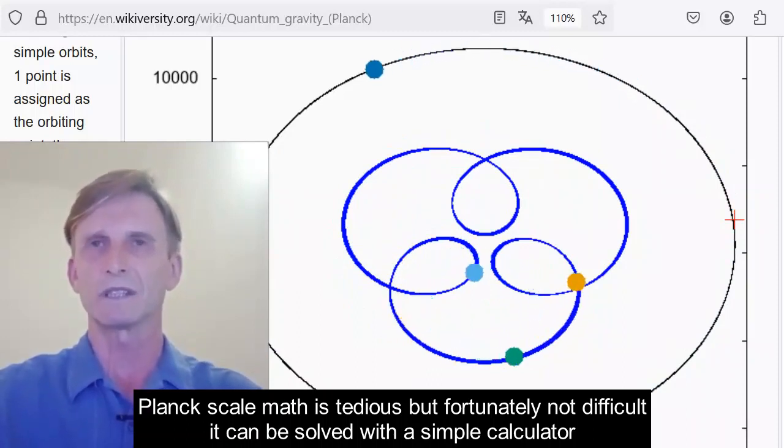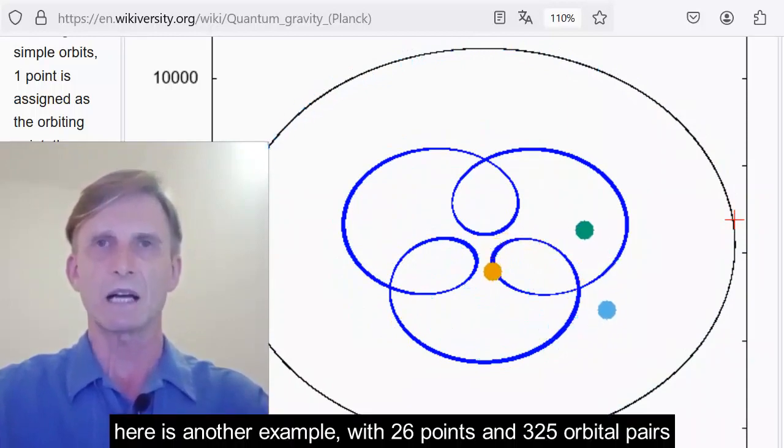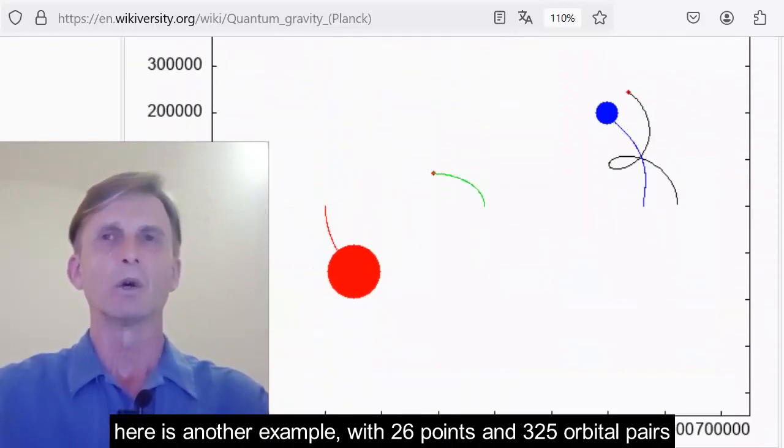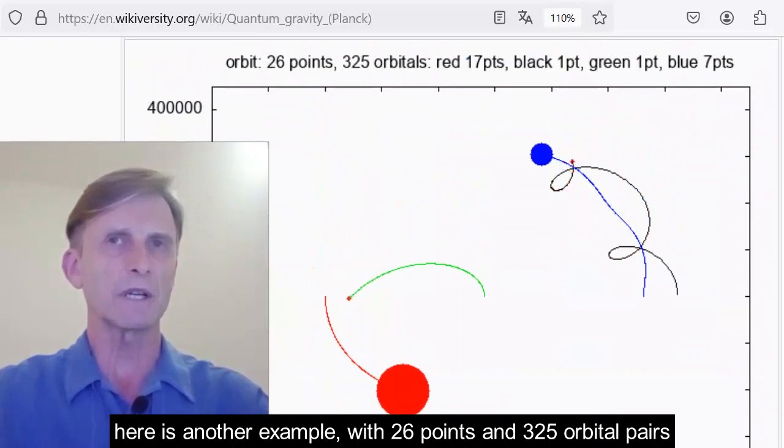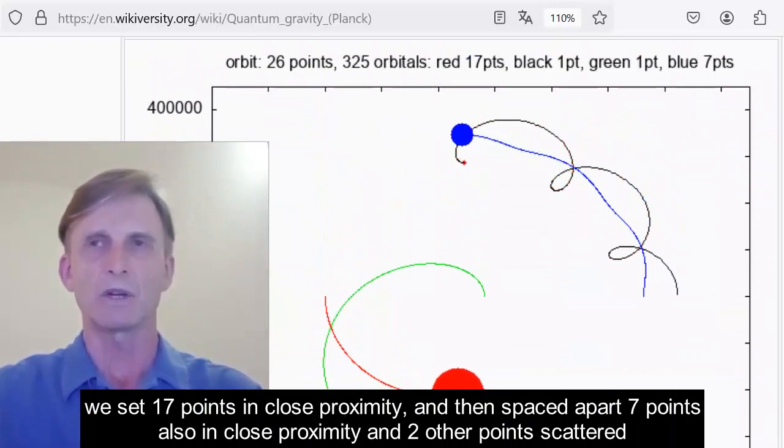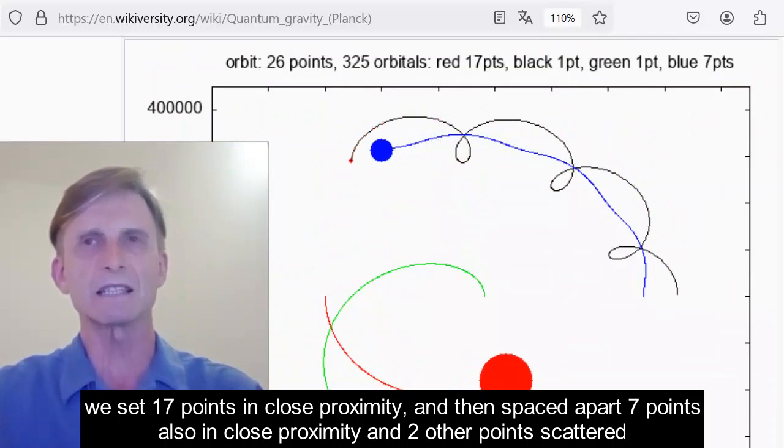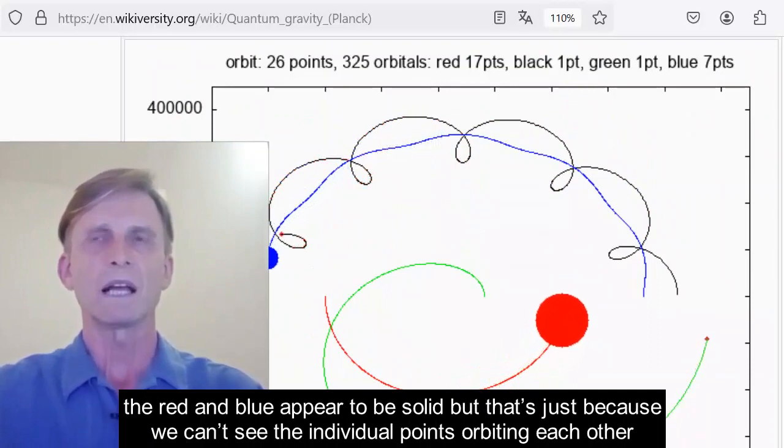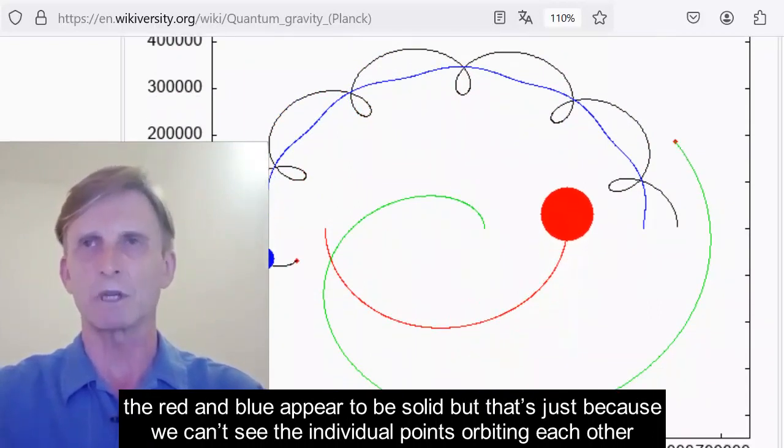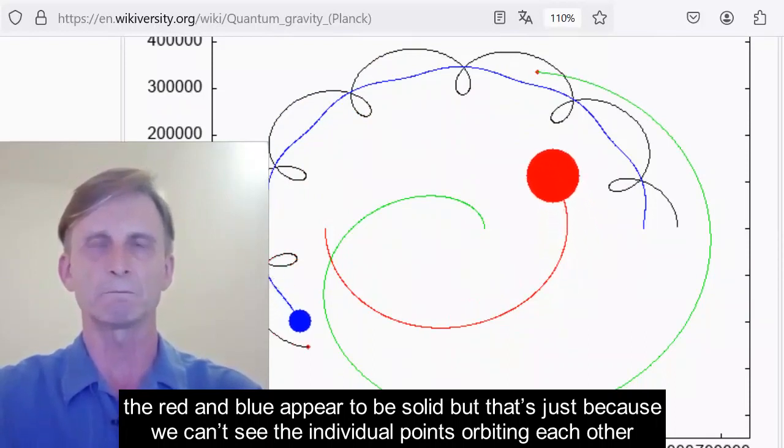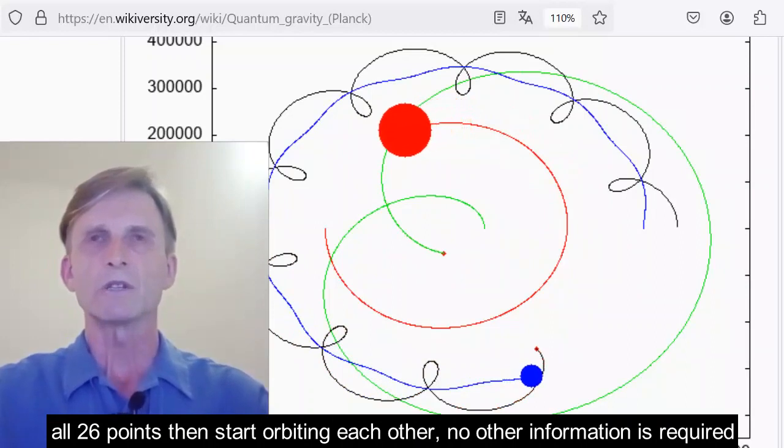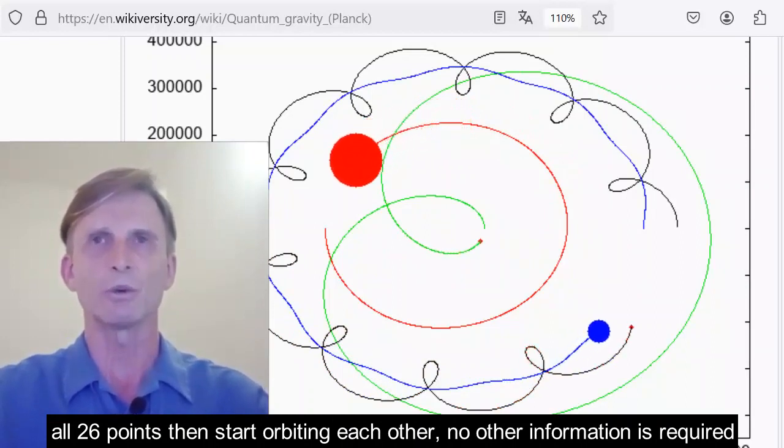Here is another example with 26 points and 325 orbital pairs. We set 17 points in close proximity and then spaced apart seven points also in close proximity and two other points scattered. The red and blue appear to be solid, but that's just because we can't see the individual points orbiting each other. All we have done is set the initial coordinates for each point on our 2D map and press Start. All 26 points then start orbiting each other. No other information is required.